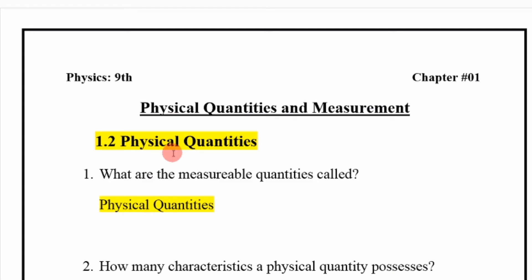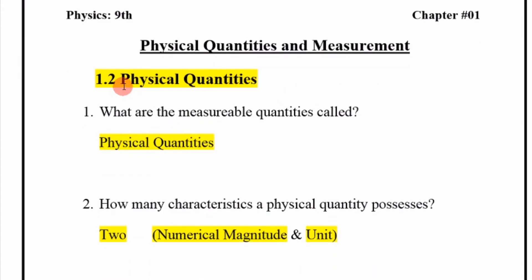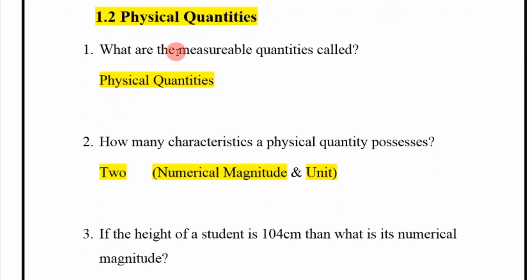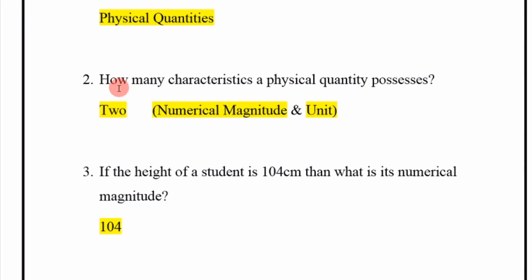Assalamu alaikum, hello friends and welcome to the next lecture of ninth class physics. We start now Chapter 1: Physical Quantities and Measurement, section 1.2 Physical Quantities. What are the measurable quantities called? Physical quantities. How many characteristics does a physical quantity possess? Two: numerical magnitude and unit.